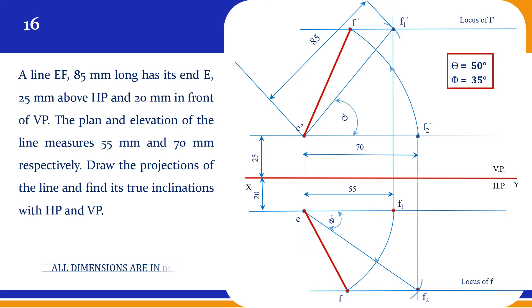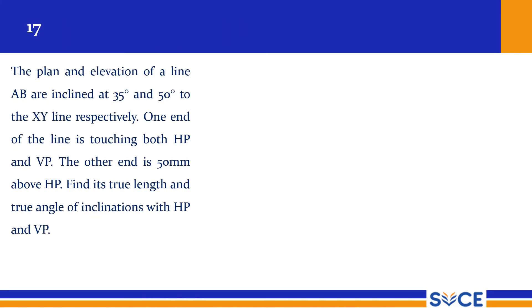Please cross-check this answer, students. In the next problem of similar kind, the plan and elevation of a line AB are inclined at 35 degrees and 50 degrees to the XY reference line respectively — beta is 35 degrees and alpha is 50 degrees.